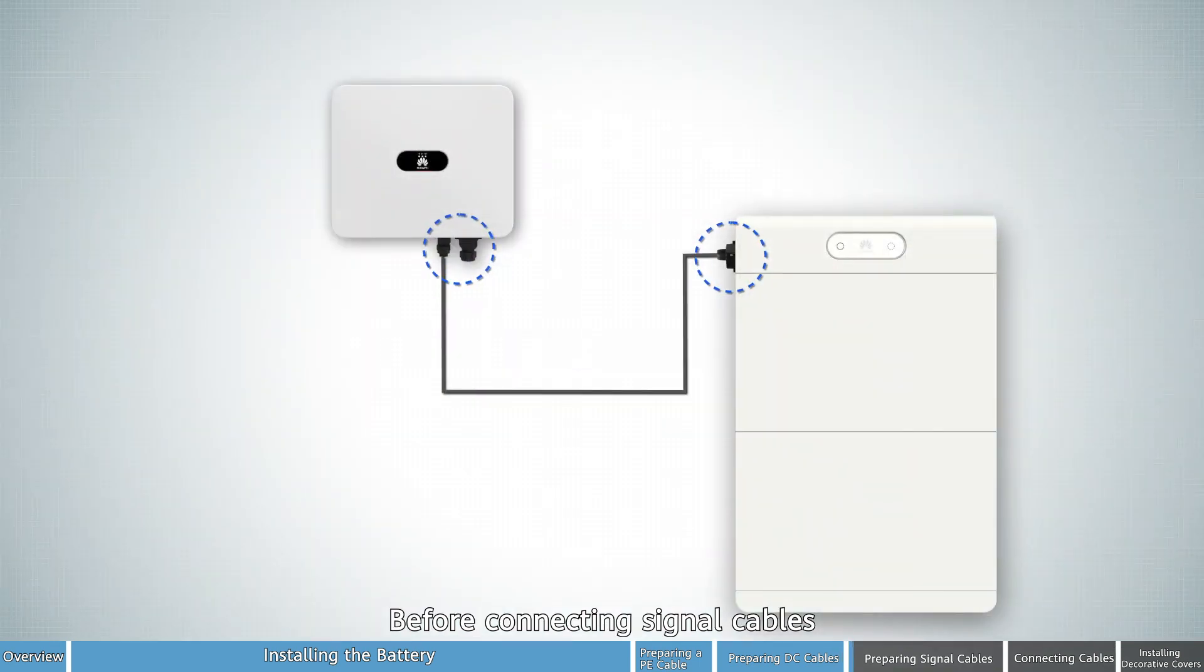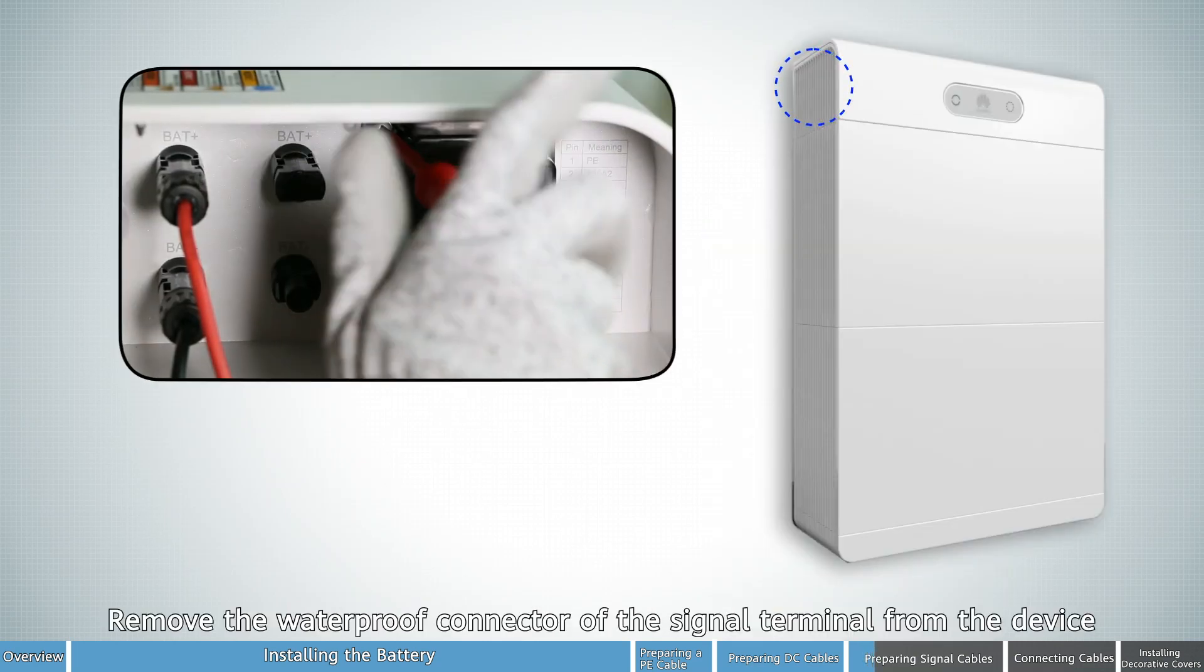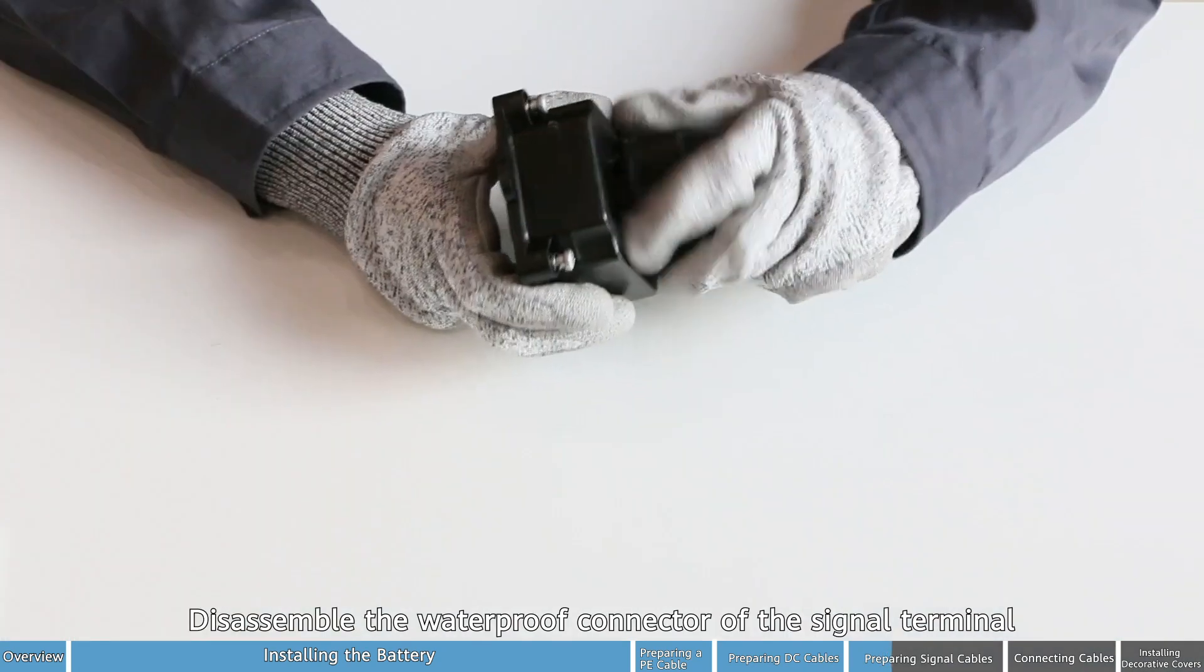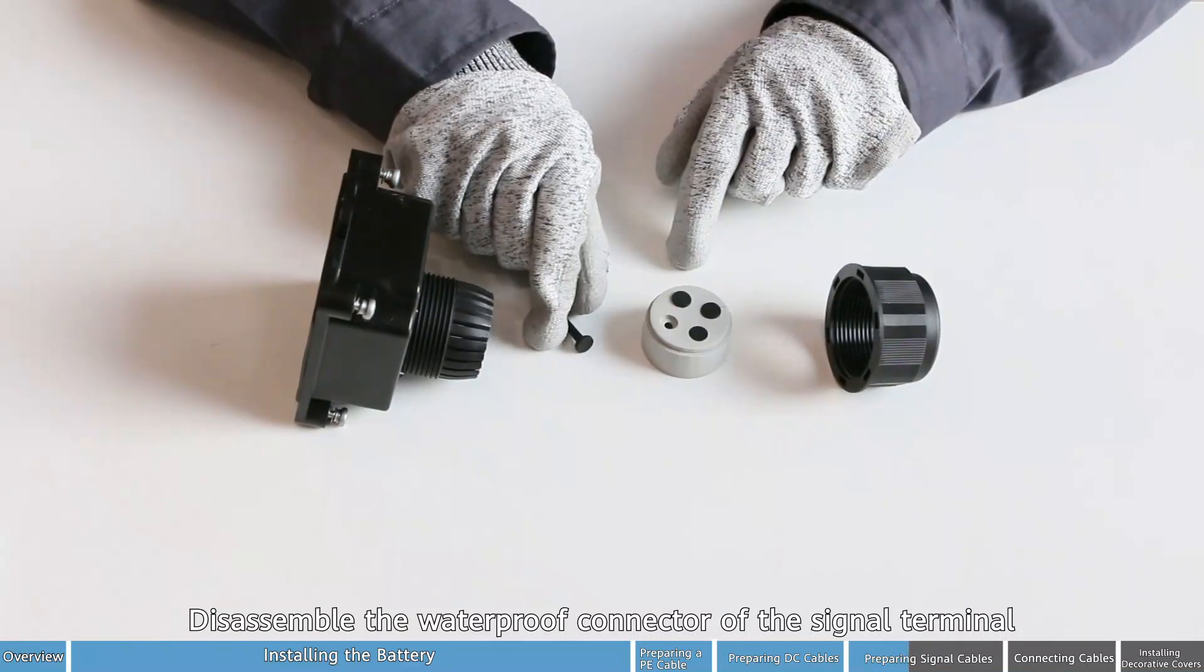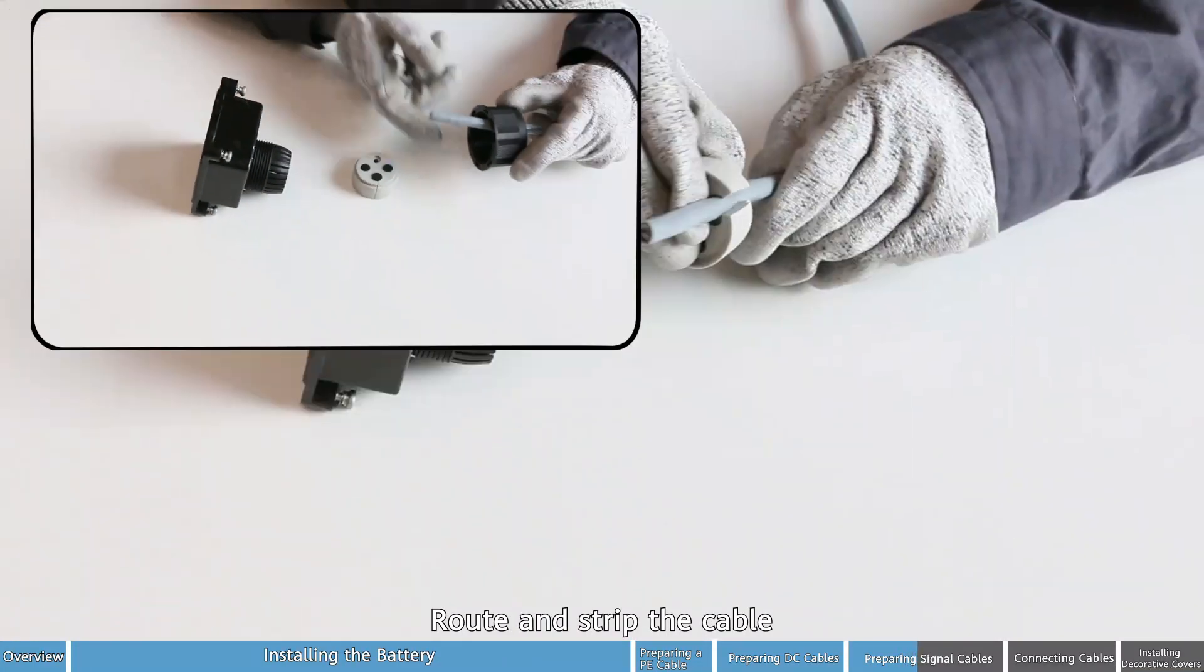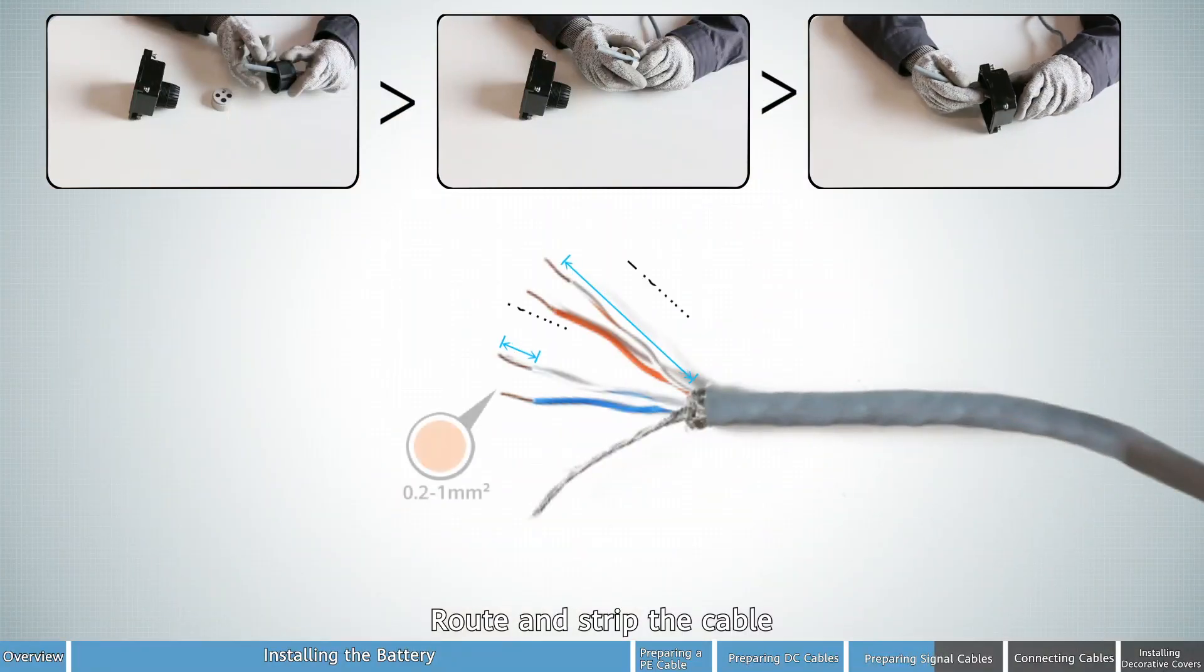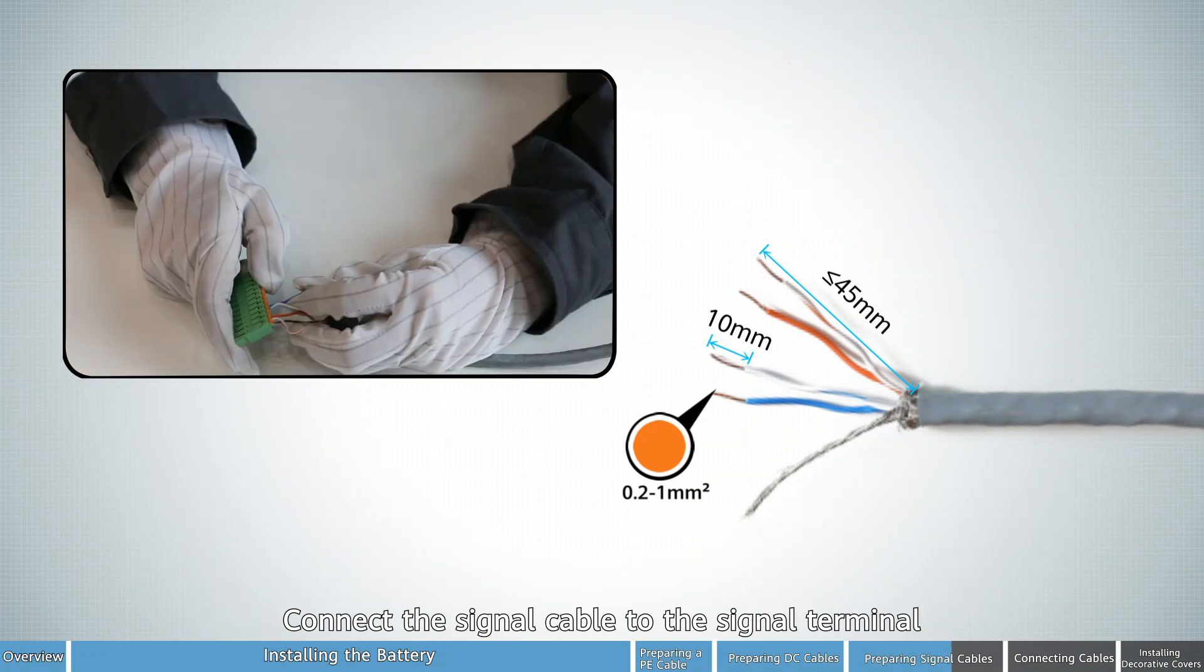Before connecting signal cables, let's see how to prepare the signal terminal. Remove the waterproof connector of the signal terminal from the device. Disassemble the waterproof connector of the signal terminal. Route and strip the cable. Connect the signal cable to the signal terminal.